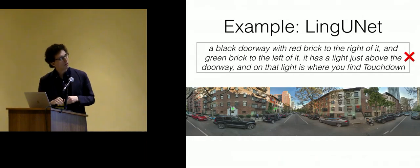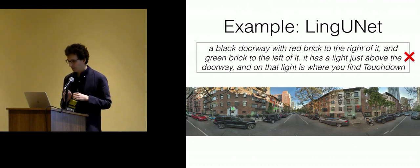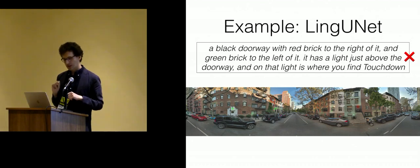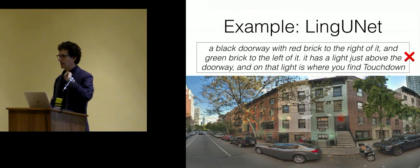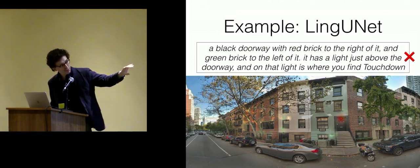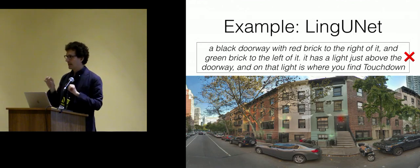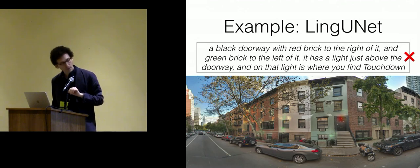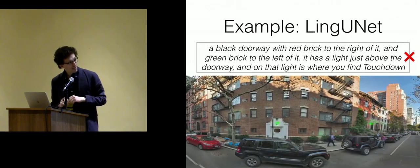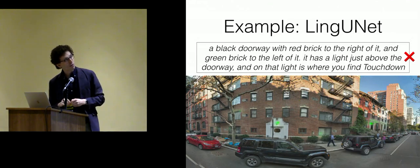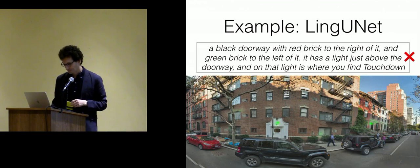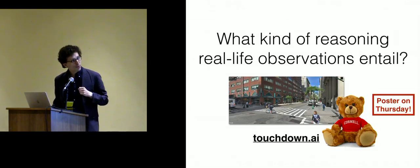This failure example is very illustrative. The SDR description says: 'There is a black doorway with red brick to the right of it and green brick to the left of it. It has a light just above the doorway, and on that light is where you find Touchdown.' If you zoom in on this West Village panorama, the gold label shows the correct Touchdown location, while the green shading shows Lingonet's estimated probability distribution. We do put the majority of the distribution on doors and lights above doors — this architecture is very common in the Village — but we miss the more complex constraints about the surrounding walls.